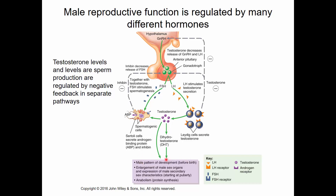Testosterone has several key functions. Before birth, it's important for developing the embryo into a male. At puberty, testosterone develops the male sex organs and secondary characteristics — getting taller, broad shoulders, a deeper voice, growing a beard. Testosterone is a powerful anabolic hormone that promotes protein synthesis and growth. If testosterone levels are too high, they feed back to inhibit LH from the anterior pituitary and inhibit GnRH from the hypothalamus.